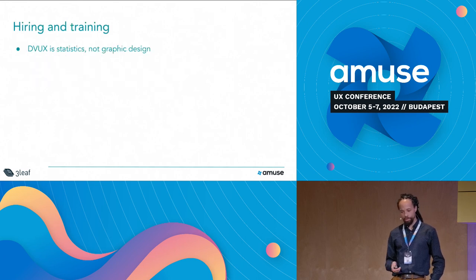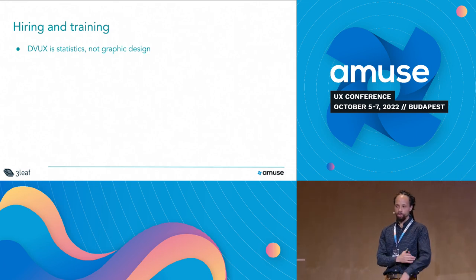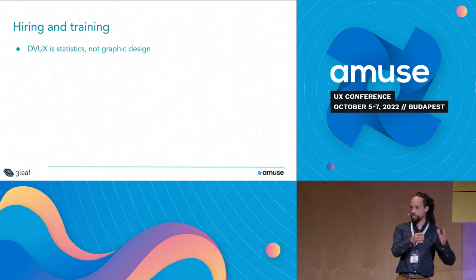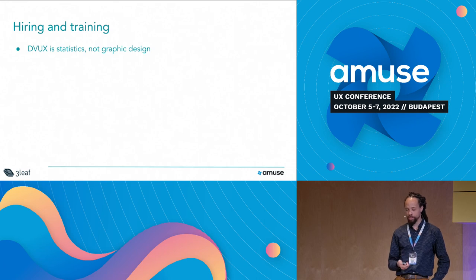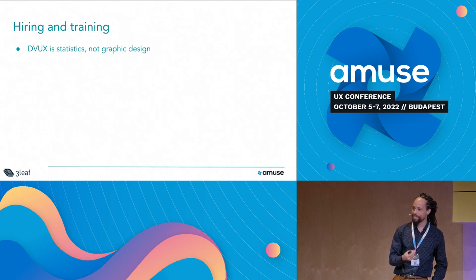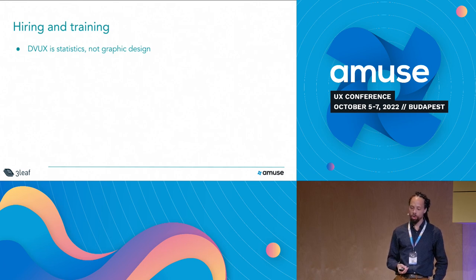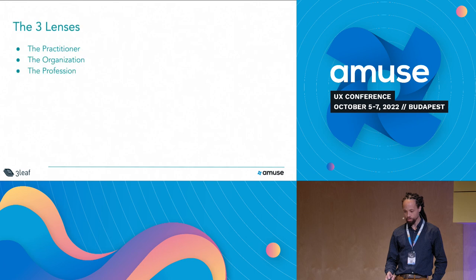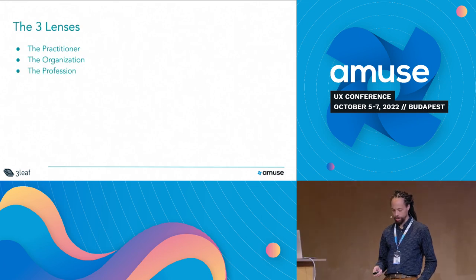From a hiring and training perspective, data viz or DVUX is hard to find candidates for. Statistics, primarily as a skill set, is not a branch of graphic design — it seems to be graphic design because what you get in the end is visual graphics, but when training or hiring, you want to find folks that have a little bit of a stats background and have also learned from those book authors I showed.